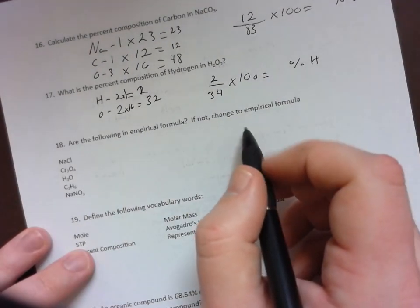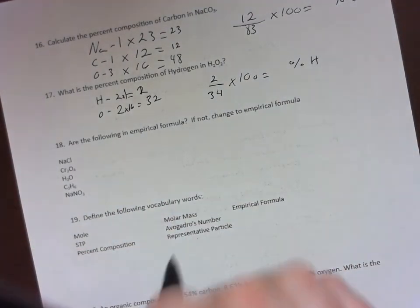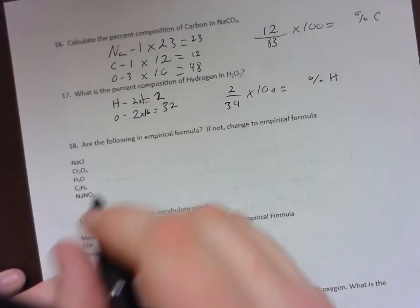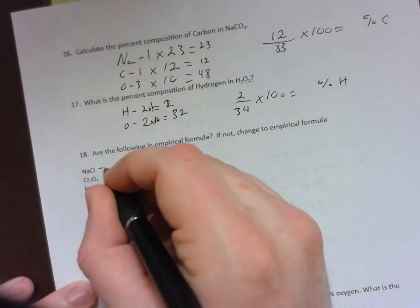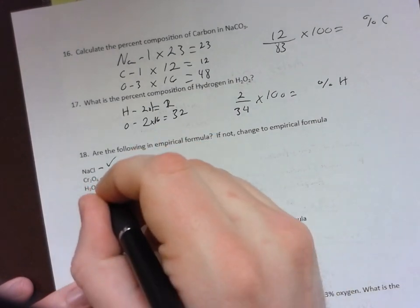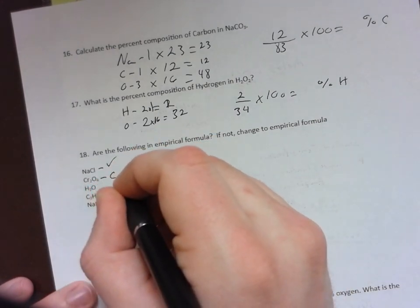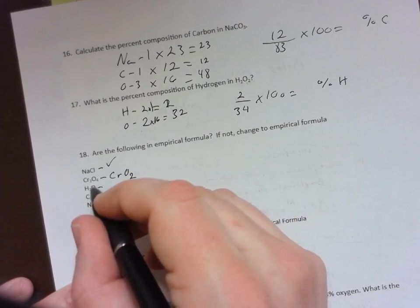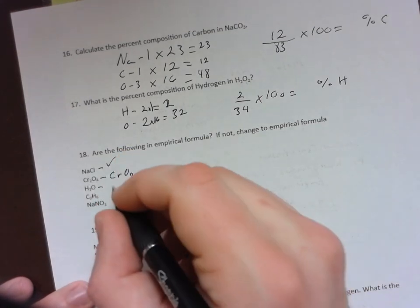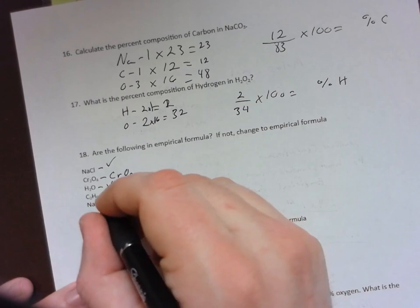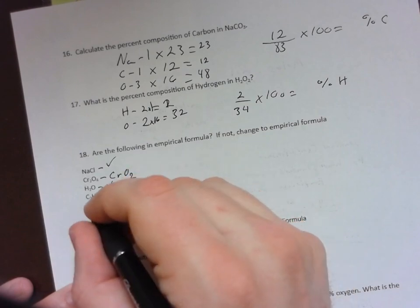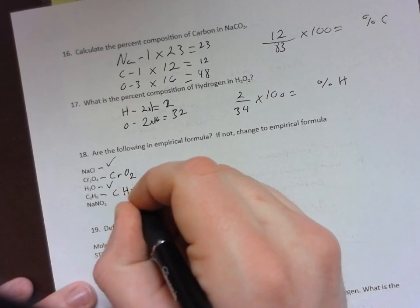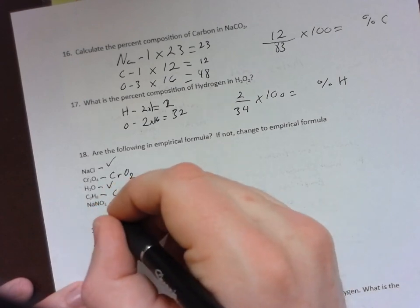Empirical formula. Remember, empirical formula is the smallest ratio amongst those. I see this one is good. I can actually lower this one to CrO2. This one only has one I, so I can't do anything else. This one I am going to lower because both of these can be divided by 2, so I have CH3, and then I only have one Na, so this one's good too.